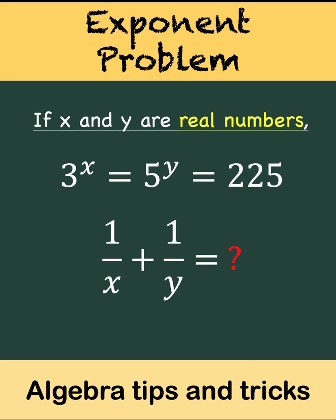If x and y are real numbers and 3 to the x is equal to 5 to the y equals 225, what is the value of 1 over x plus 1 over y?